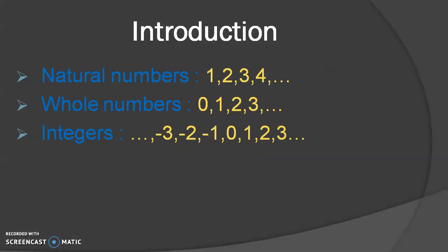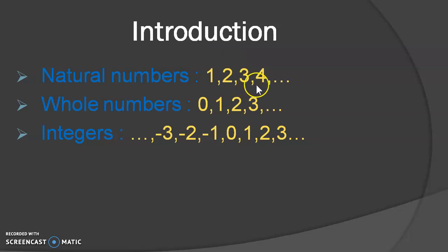So now let us begin. The name of the chapter is Rational Number, but before we discuss about rational numbers, let us do a quick revision of what you have learned in your lower classes. The first is Natural Number. Do you remember about natural numbers? The numbers from 1, 2, 3 and so on are called the natural numbers.